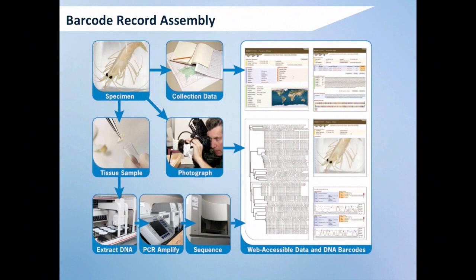So how does DNA barcoding work? It's basically an assembling process. It starts with the specimen, and associated with the specimen there is the collection data — the information of where that specimen was collected — as well as a photograph of that specimen. The tissue sample then gets processed in the lab for sequencing. All that information — the collection information, the pictures, and the sequence information — gets deposited into an online database accessible from anywhere and to everyone, which is known as the Bold Systems database.